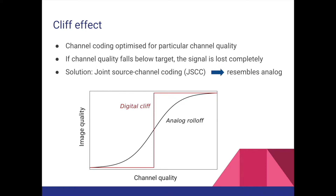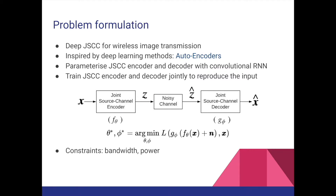The solution to this is called joint source channel coding, which combines the source and channel encoders to replicate the behavior of analog signals, which degrade image quality gradually as the channel quality gets worse. In this project, we use deep neural networks to design a joint source channel coding scheme for wireless image transmission. The idea is to use convolutional recurrent neural networks to parameterize the joint source channel encoder and decoder, using a deep learning technique called auto-encoding, which tries to replicate the input at the output through a bottleneck layer — our channel — under the constraint of bandwidth and power.